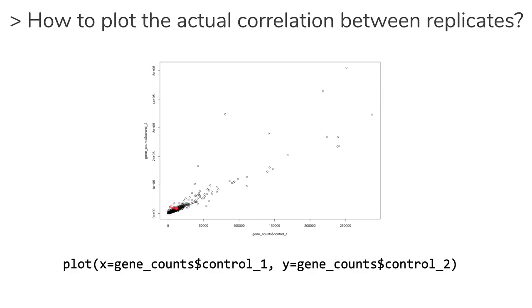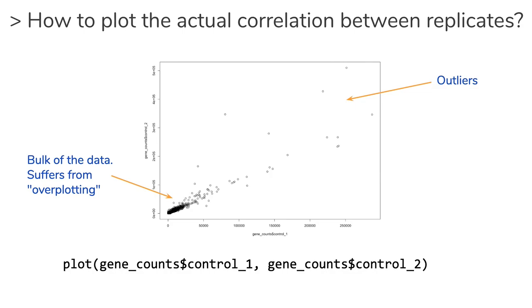This is a concept known as overplotting — you have so many points with roughly the same value that you can't pick out any one particular point representing one particular gene. One strategy for dealing with that is to zoom in: make a subplot focusing on a specific region to get much more resolution. Zooming in really just means limiting the range of the axes — telling R to only plot the genes that have x and y values below some limit.